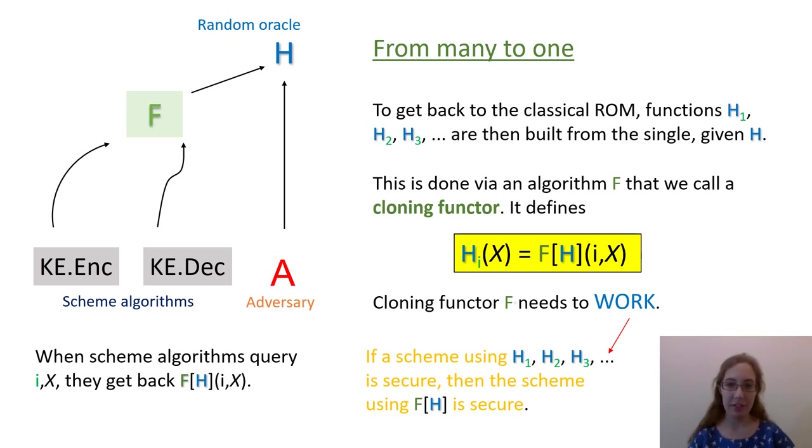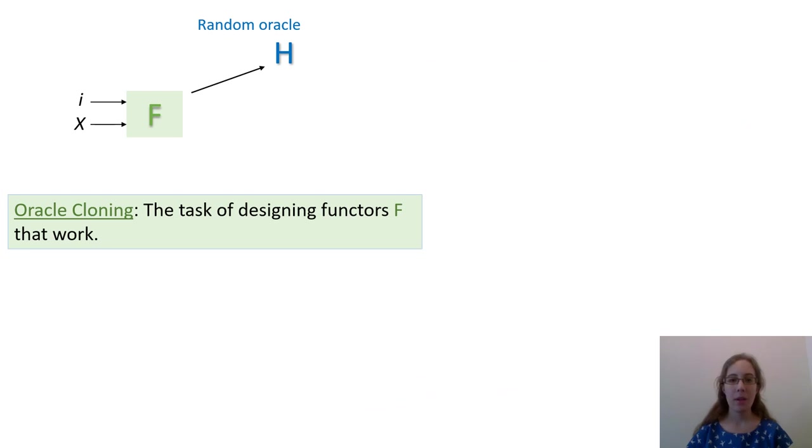In practice, and in the NIST submissions, oracle cloning is done in ad hoc ways. Some schemes say how they do it, meaning they specify the cloning functor in their specification document. In others, it is implicitly defined by the implementation. At this point, we can abstract out the cloning functor independent of its usage. It's an algorithm that takes inputs i and x and has access to a single random oracle H. The desired property is that the functions F1, F2, and so on behave like independent random oracles in the sense I described earlier, meaning any scheme secure with such independent random oracles remains secure when they are implemented via F. We'll give a more formal definition later. We call oracle cloning the task of designing a cloning functor that is good or works in this sense.